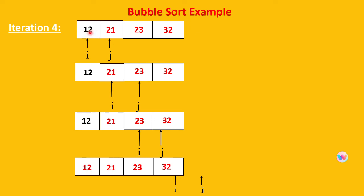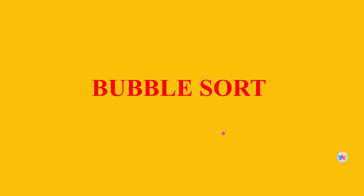In iteration 4, i points at the first location and j at the second. The j-th element is already at its place. Comparing 12 and 21: 21 is not less than 12, so it retains its place. Continuing to increment i and j, j element is not less than i element each time, so no changes are made. At the end of iteration 4, the array is completely sorted: 12, 21, 23, 32 — from smallest to largest, ascending order. This is bubble sort — comparing two adjacent or neighboring elements with each other in every iteration.